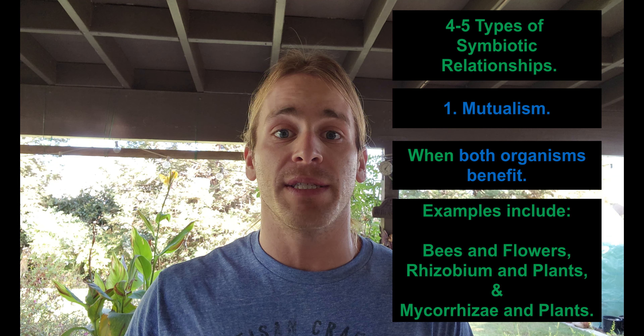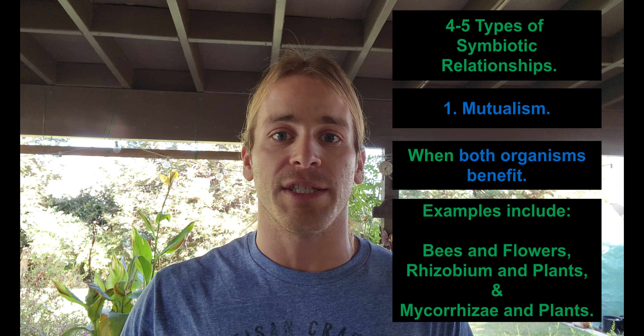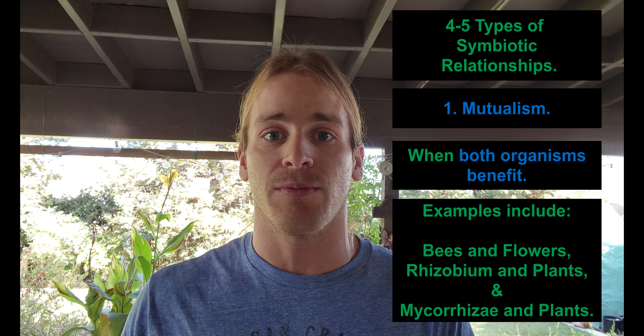The one I talked about is called a mutualistic relationship. This is where both organisms are going to benefit. A really common example is bees and flowers for pollination — bees get nectar, flowers get pollinated. This also includes rhizobium in plants and mycorrhizae in plant interactions as well.